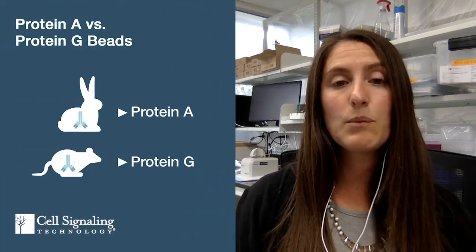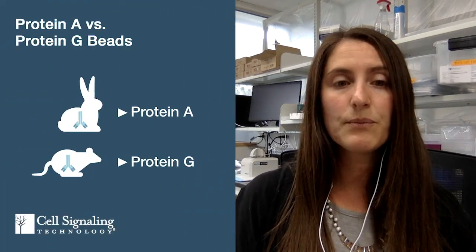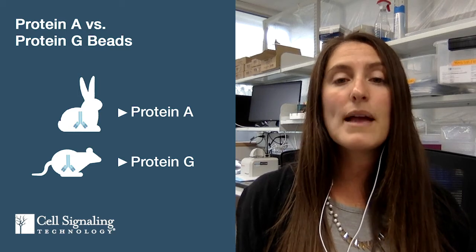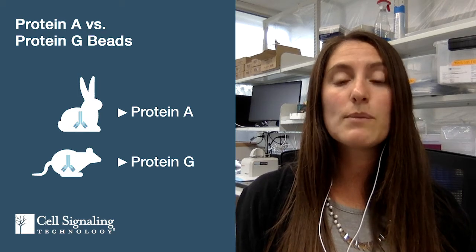The immunoprecipitated complex can be prepared for Western blotting by washing with lysis buffer and then resuspending and boiling in SDS sample buffer. When it comes to choosing what type of beads to use, the choice of protein A versus protein G beads should be based on the host species of the IP antibody. We recommend protein A agarose or magnetic beads for IP with rabbit antibodies, and protein G agarose or magnetic beads with mouse antibodies.